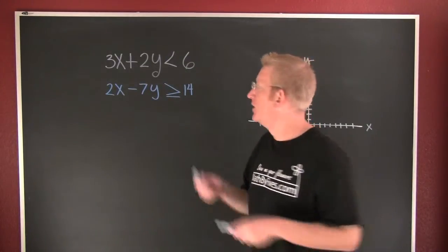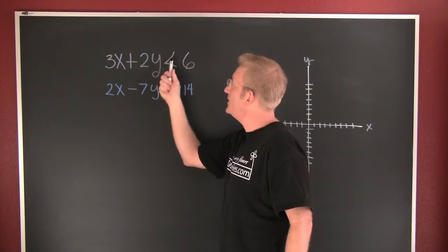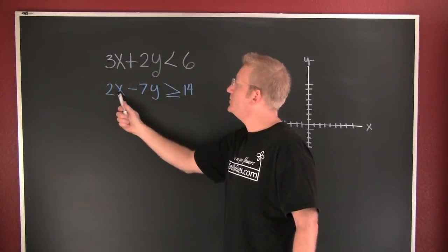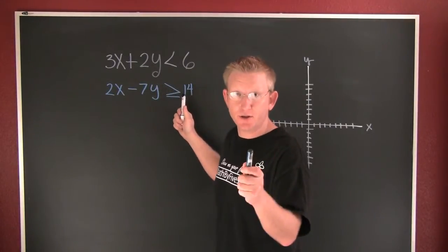All right, so I've drawn a nice system for you. I'm looking up here, it appears I have 3x plus 2y is smaller than 6. In addition to that, I'm gonna have 2x minus 7y is bigger than or equal to 14.